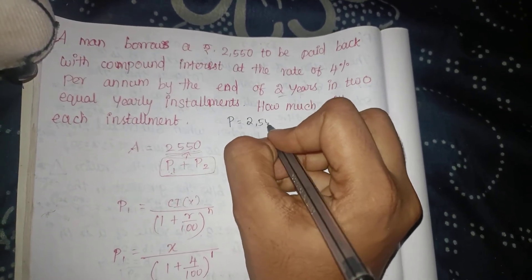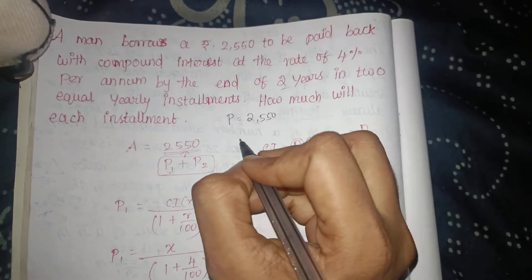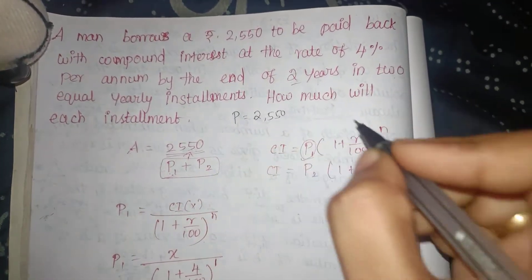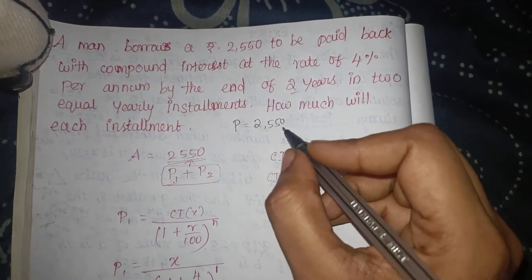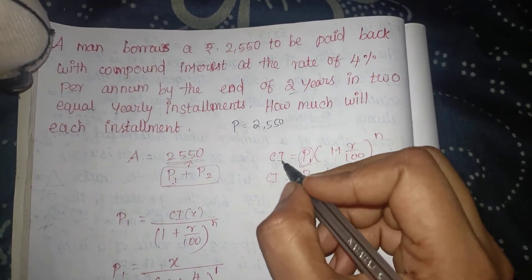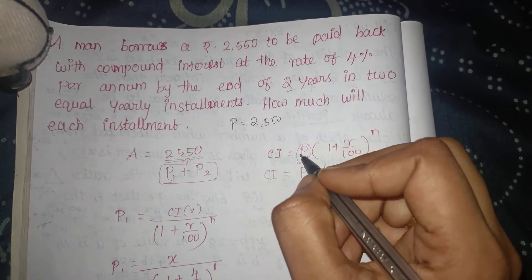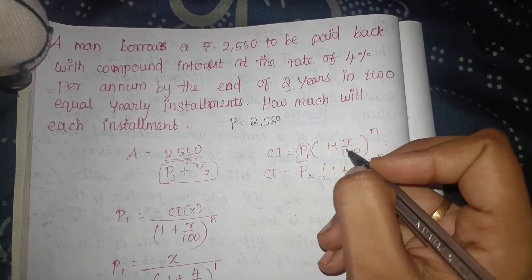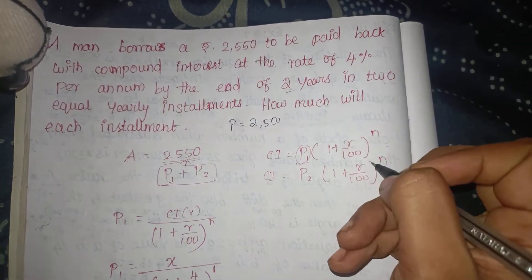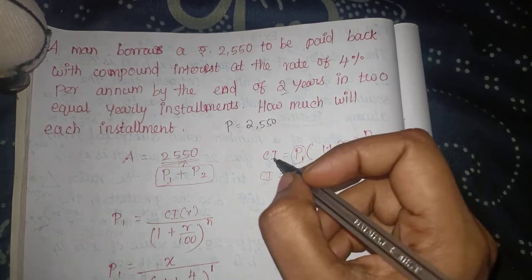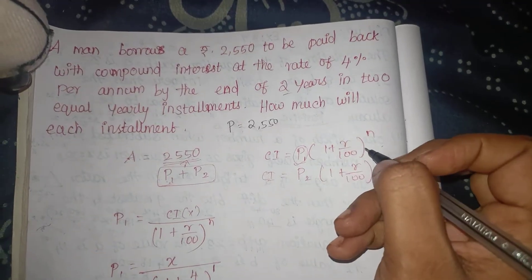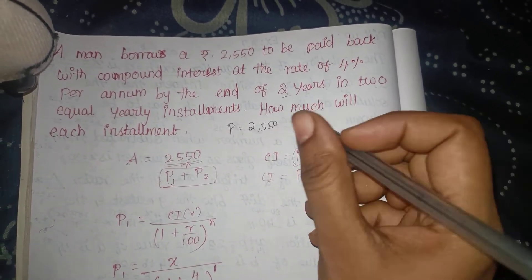For compound interest, the formula is: principal into (1 + R/100) to the whole power n. This is the standard compound interest formula.